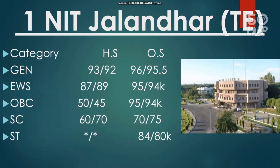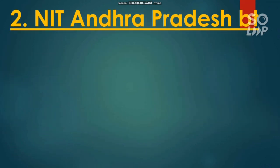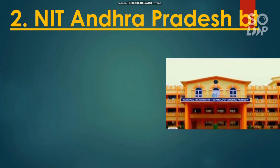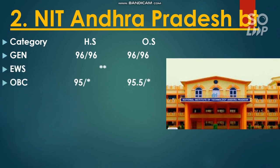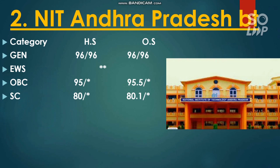The next one is NIT Andhra Pradesh, where Biotechnology has the lowest cutoff. For General: 96 percentile for both male and female. There is no EWS seat reserved. For OBC: 95.5 percentile. Where you find a star mark, that category is not reserved in that branch. For SC: 80.1 percentile required. For ST: no seat reserved for other state candidates.